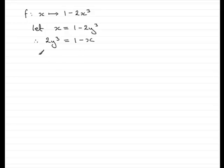Now if I divide both sides by 2, we get y cubed equals 1 minus x all over 2. And then if I take the cube root of both sides, we end up with y equals the cube root of 1 minus x all over 2.